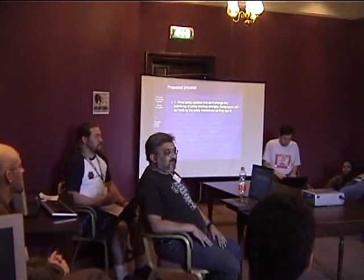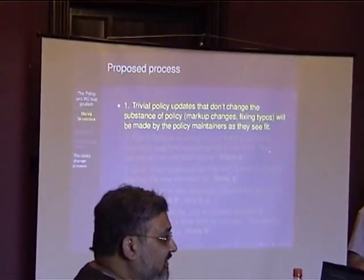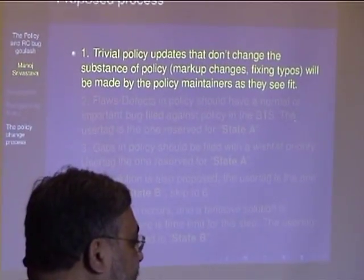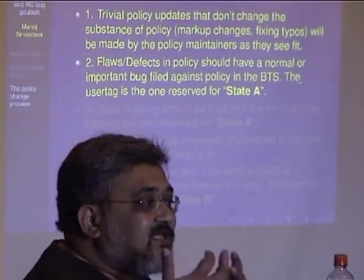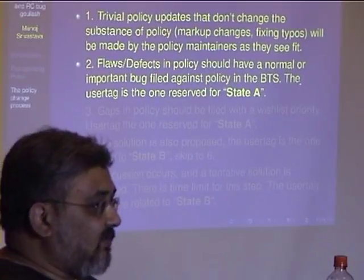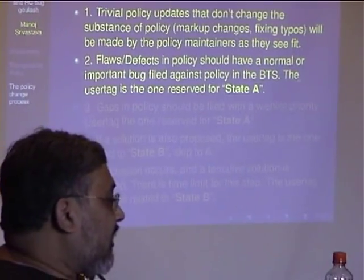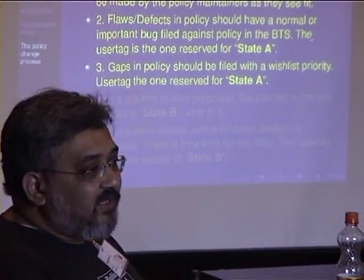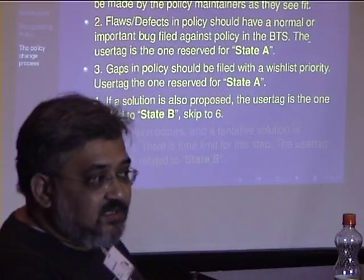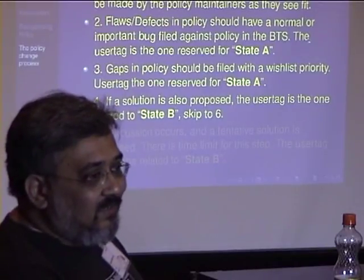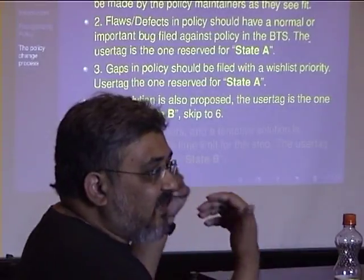For trivial policy changes like typos, we should be able to fix them without going through the whole process. If policy is actually wrong about something, we want it to have a normal bug with a user tag, in state A because we don't know what to fix yet. Gaps in policy or new proposals go in as wish-list, also in state A. If a solution is proposed either initially or just thereafter, we move to state B. I might be over-formalizing the user tag system a bit, so I'm willing to listen to pushback — this was my first take on the process.